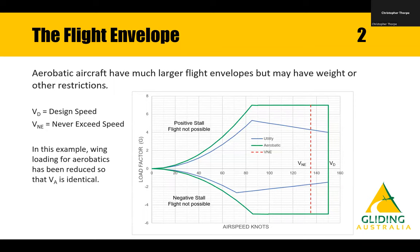Aerobatic aircraft have much larger flight envelopes but may have weight or other restrictions. The CS22 aerobatic envelope shown in green is a much bigger area compared to the utility envelope. To keep the maximum manoeuvre speed identical I've had to reduce the wing loading, so often you'll see wingspan limitations and certainly fuselage weight limitations for aircraft with utility or aerobatic capabilities. There's also a much larger negative stall region available.